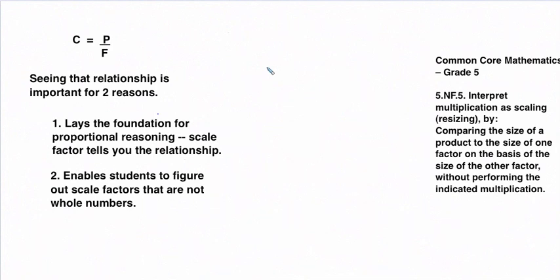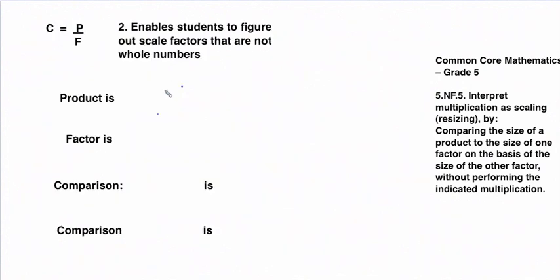For example, let's say the product is 9, and the factor is 6. Now that is not a whole number comparison. But if we do a little bit of simplification, and consider that the ratio of 9 to 6, that will simplify. We can divide them both by 3.